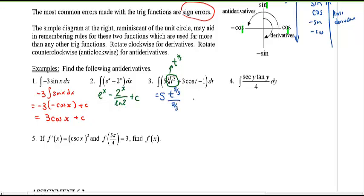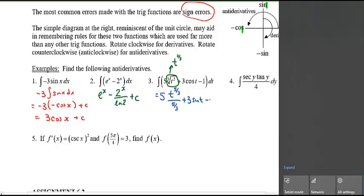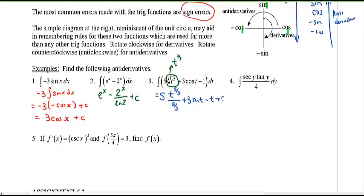The integral of cosine of course is sine, so sine t, and the antiderivative of negative one is just one t, and don't forget plus C. We will simplify this.